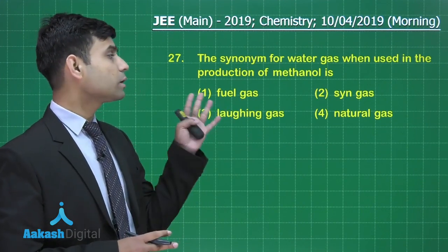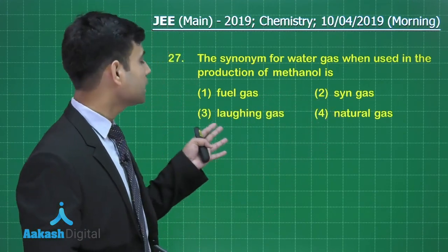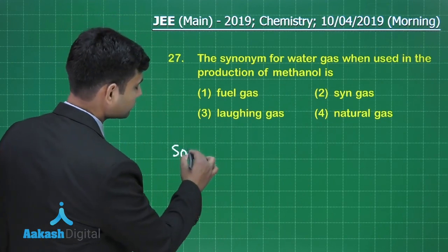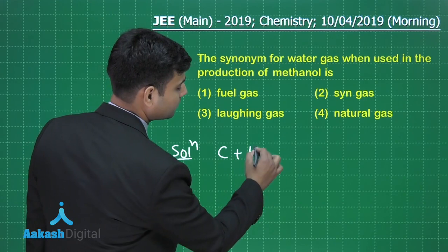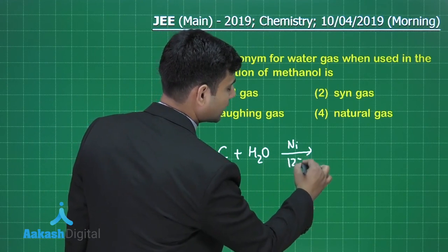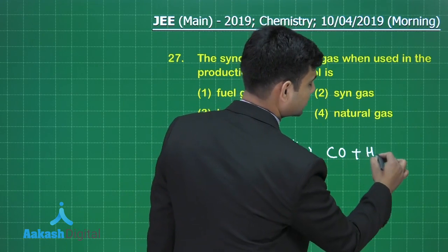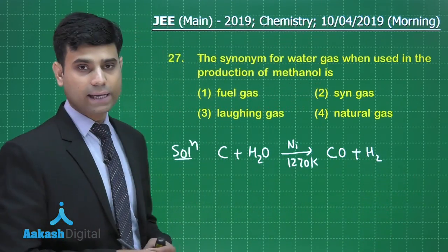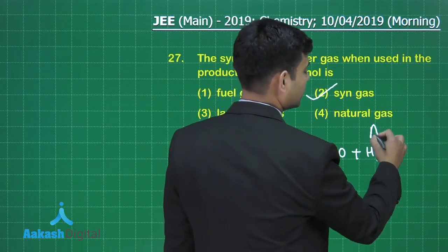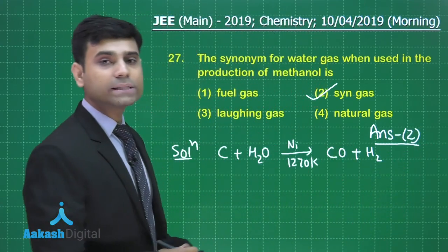The next question says: the synonym for water gas when used in the production of methanol is — option 1: fuel gas, option 2: syn gas, option 3: laughing gas, option 4: natural gas. When coke reacts with steam in the presence of a nickel catalyst at 1270 Kelvin, it gives a mixture of carbon monoxide and hydrogen gas, which is called water gas or syn gas. Hence the correct answer is option 2.